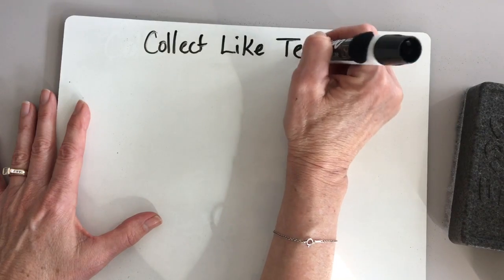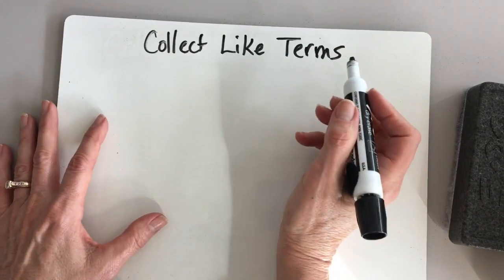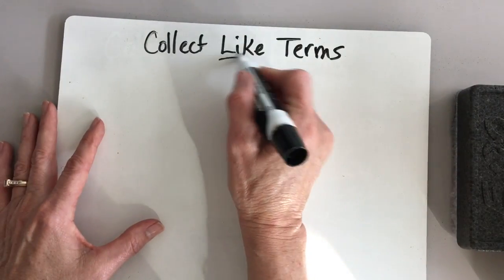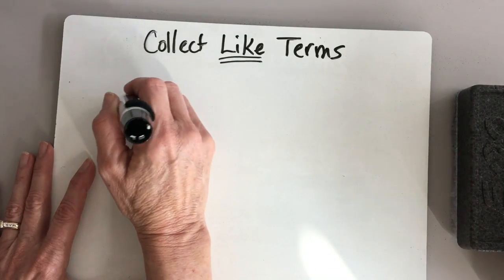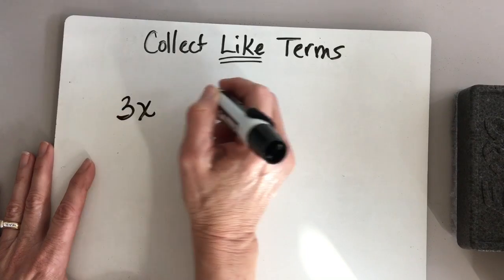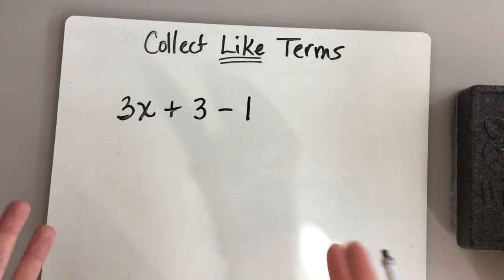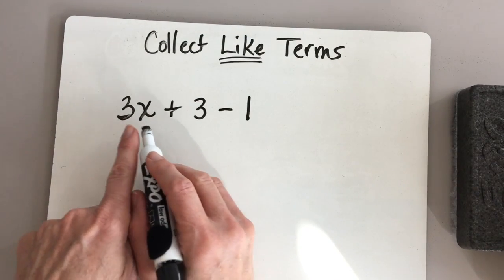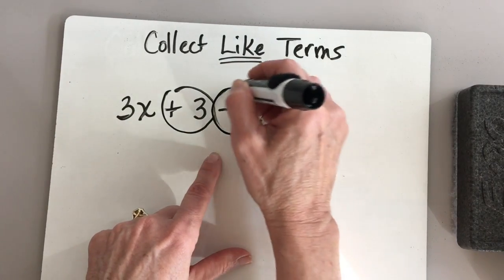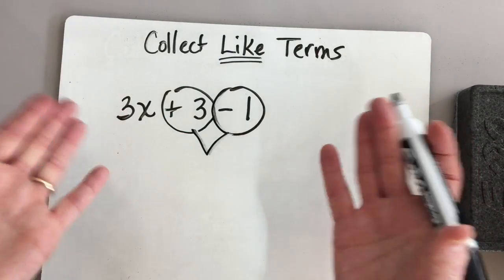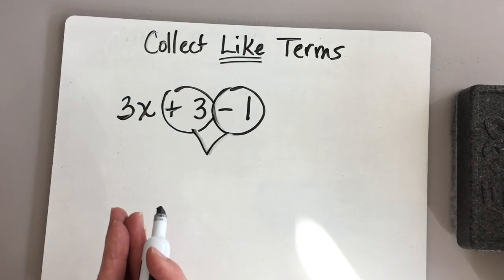Just the way this phrase is stated — collect like terms — we're going to collect things that look alike. For example, if we had 3x plus 3 minus 1, we could collect like terms. Notice that we have this plus 3 here and this minus 1 here. These two we can actually simplify and collect — we can combine them to simplify our expression.